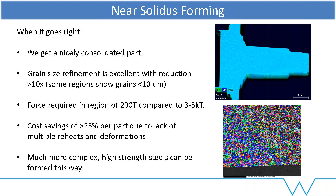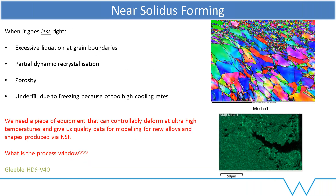Because we're not heating it up so many times — not forging and having to go back into a reheat furnace — we save quite a lot on time and energy. At those high temperatures, materials become much softer, so we can make much more complicated shapes than conventional forging. When things go 'less right,' we can form excessive liquation at the grain boundaries — not great. We can get partial dynamic recrystallisation, porosity, or if we go too cold, freezing and underfill. To really dictate what the process window is for an individual material or component, we need equipment that can controllably give us the deformation mechanics at these ultra-high temperatures, strains, and strain rates — and for this, we don't really go much further than the HDS.